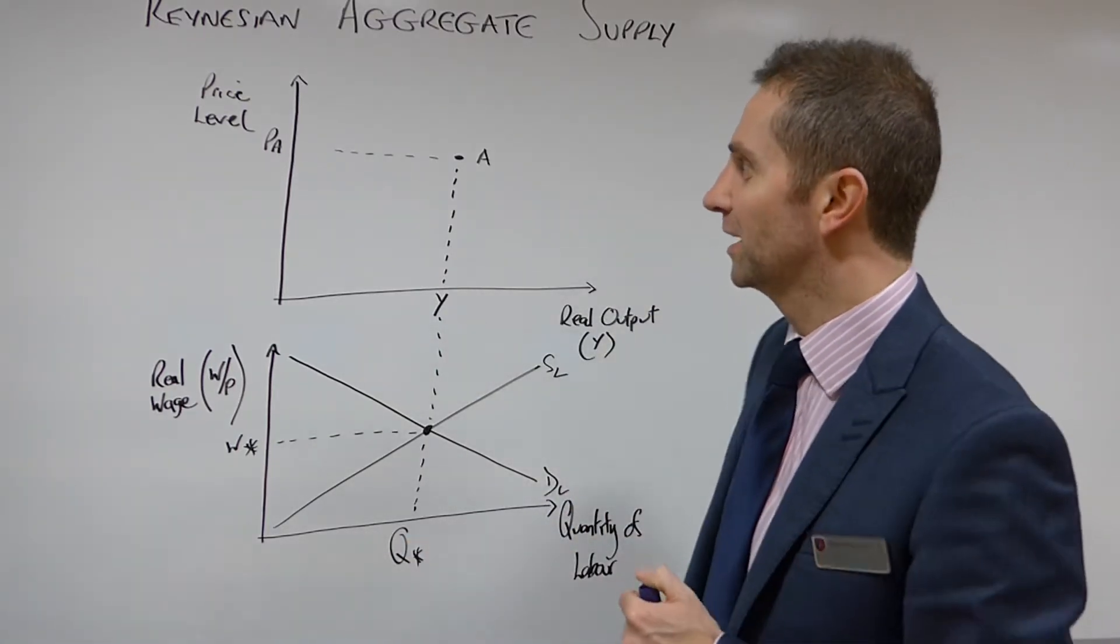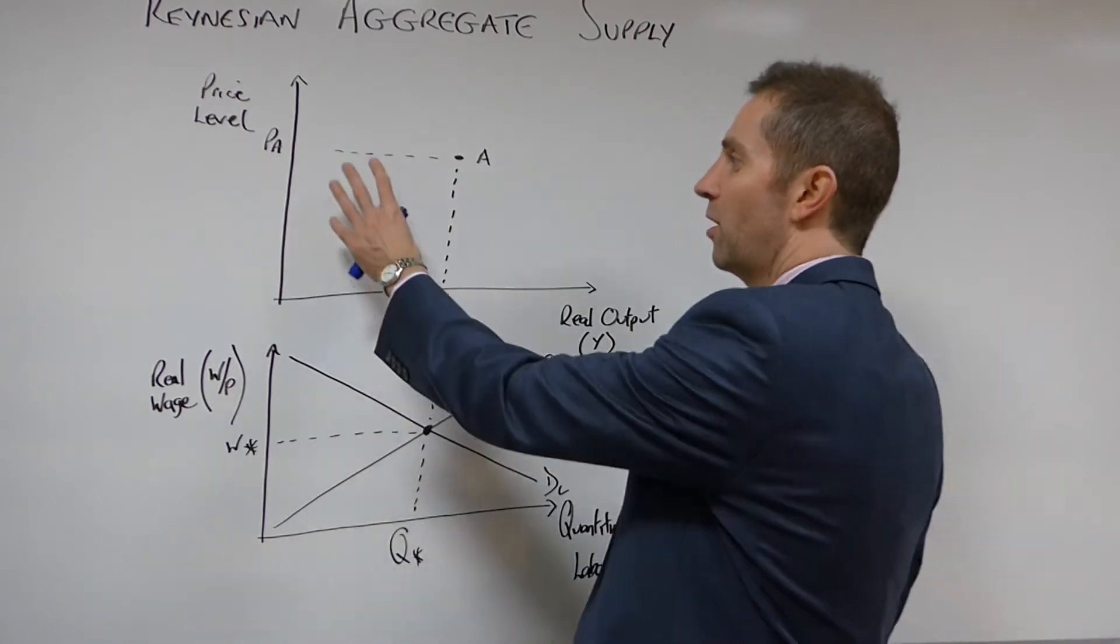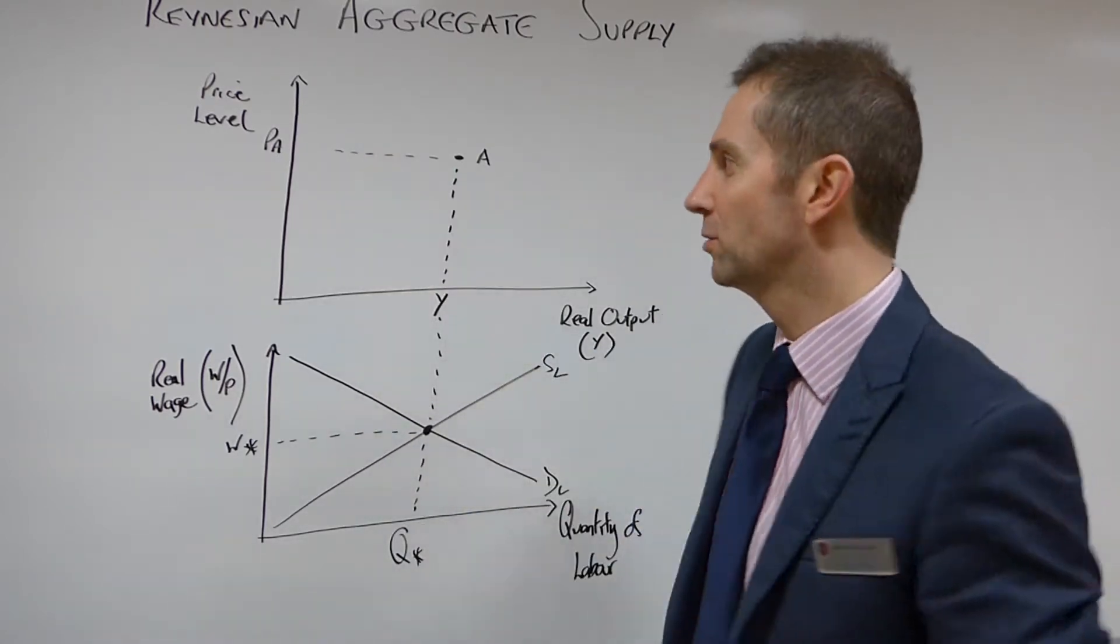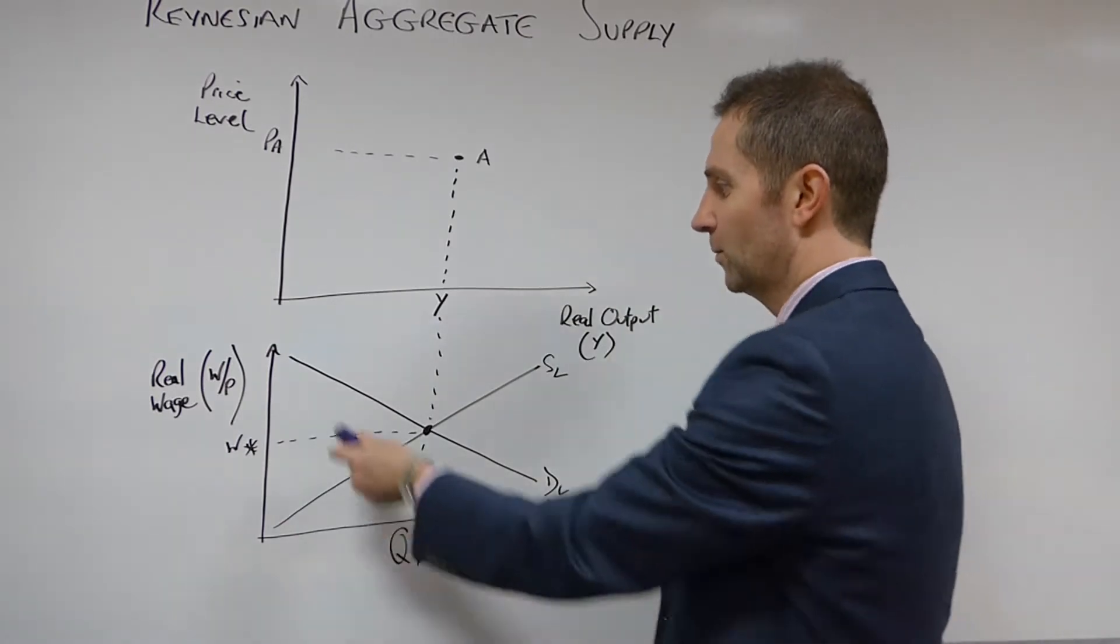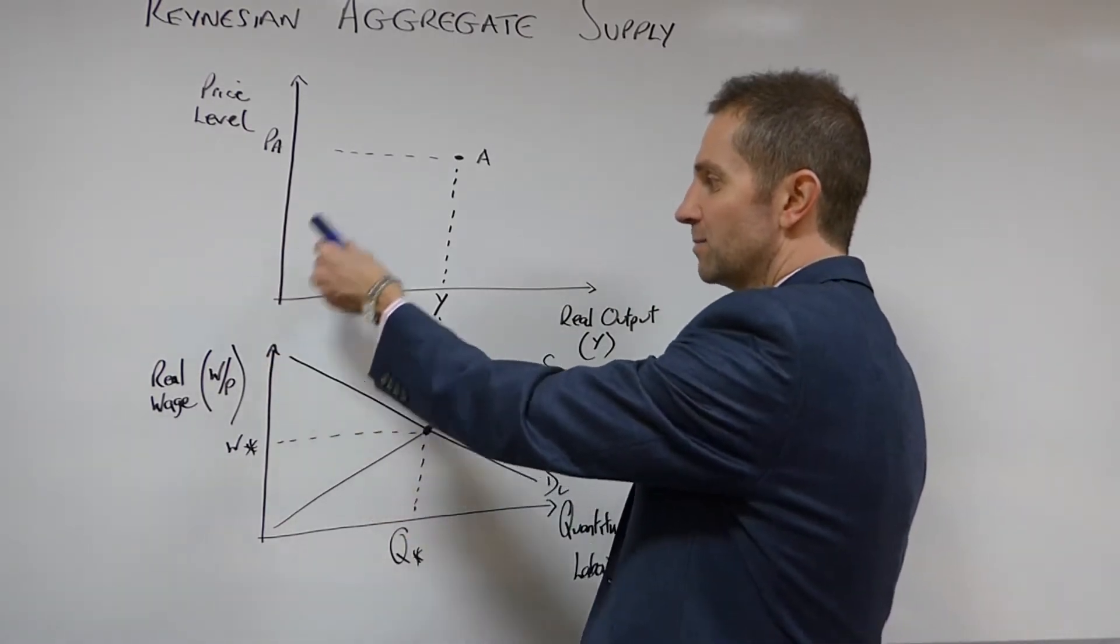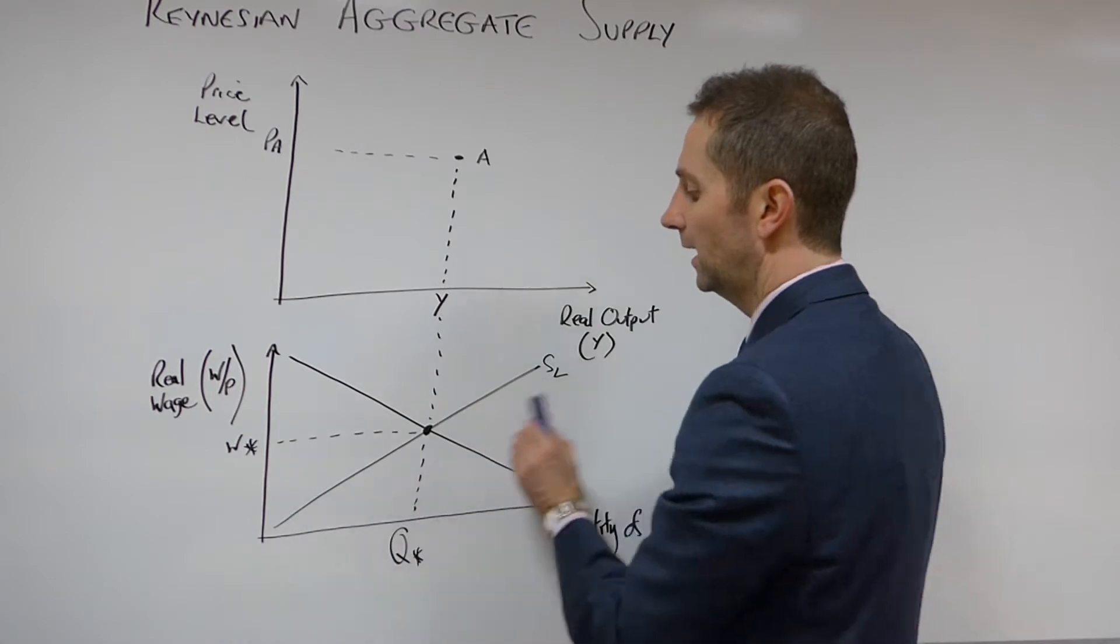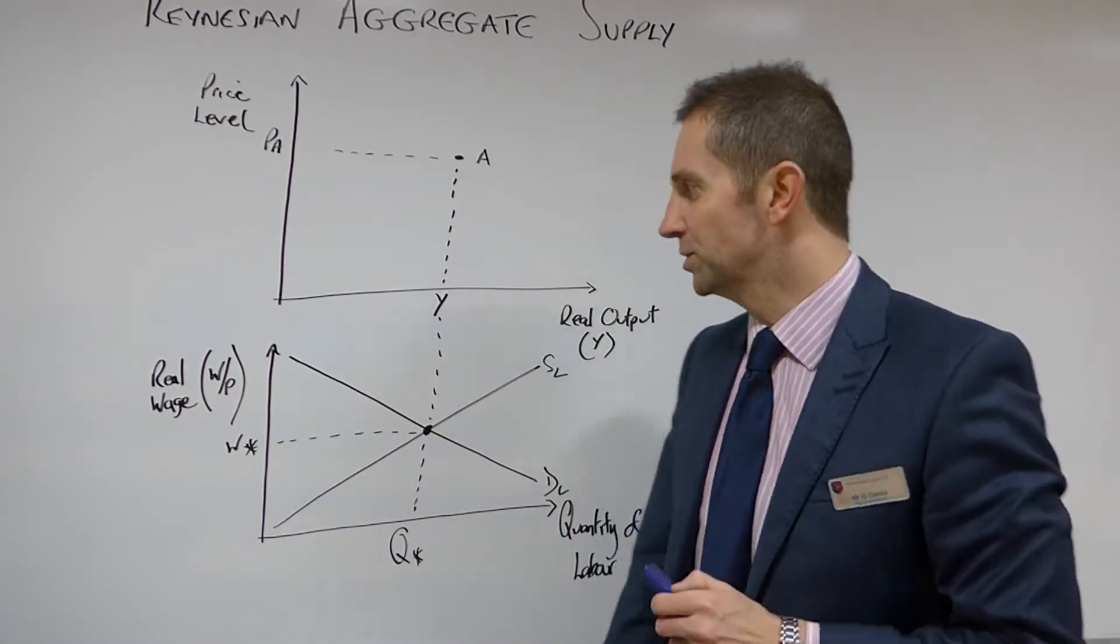So let's get stuck into this. We've got our typical macro diagram on the top here, price level and real output. And then once again we're going to be looking at how this maps into the labour market diagram which is beneath.